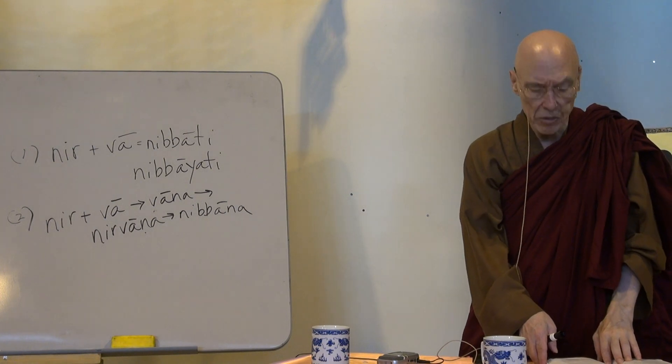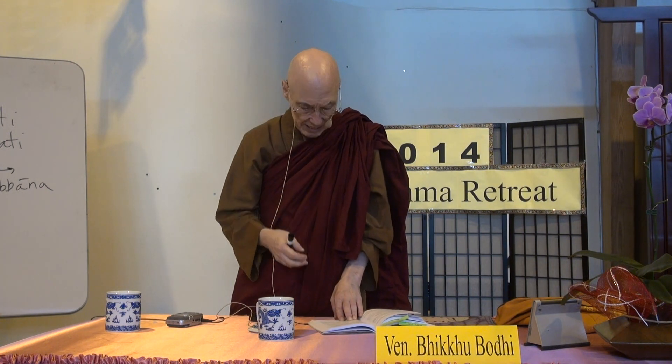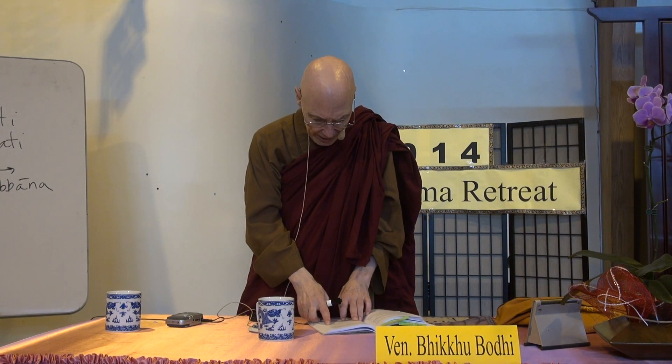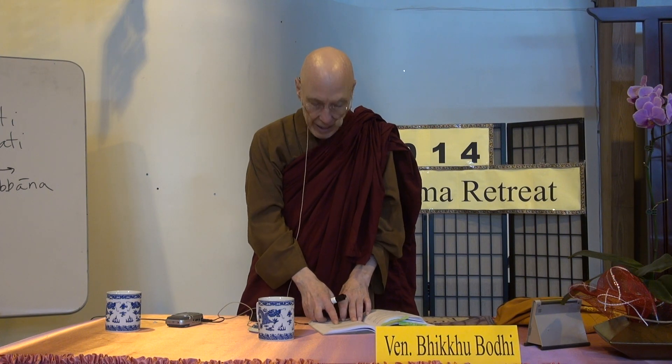Nibbana is one-fold according to its own nature — it is the super-mundane, world-transcending ultimate reality, essentially unconditioned and unproduced, and sometimes said to have the nature of ultimate peace or ultimate bliss. But with reference to a basis for distinction, Nibbana is spoken of as two-fold: the Nibbana element with the residue remaining, and the Nibbana element without the residue remaining. The residue is the combination of the five aggregates that constitute our individual existence.